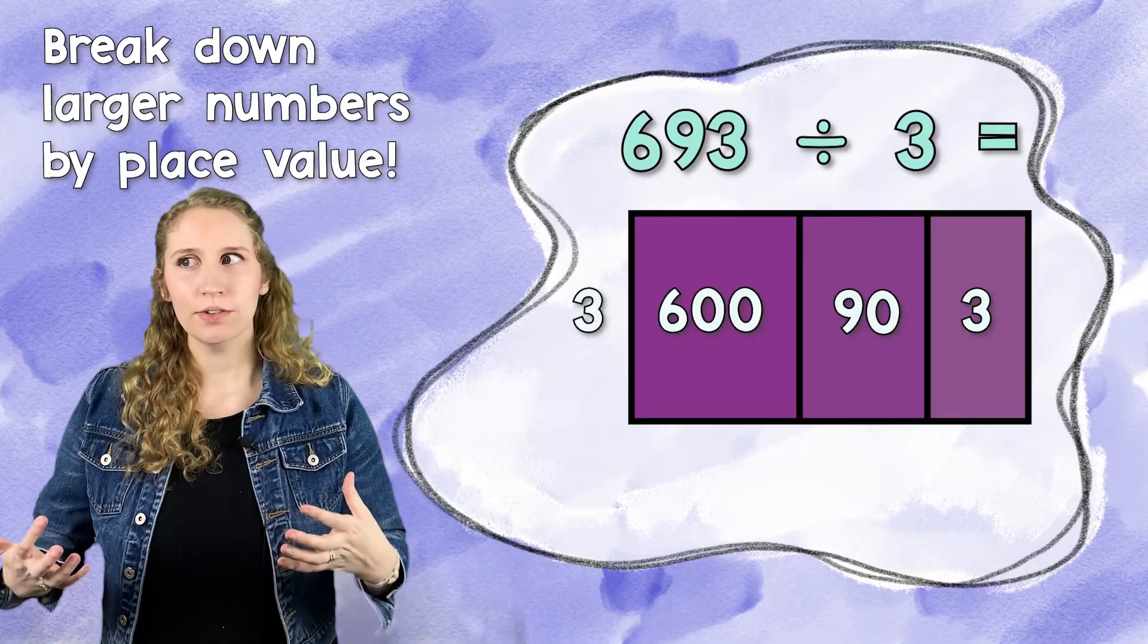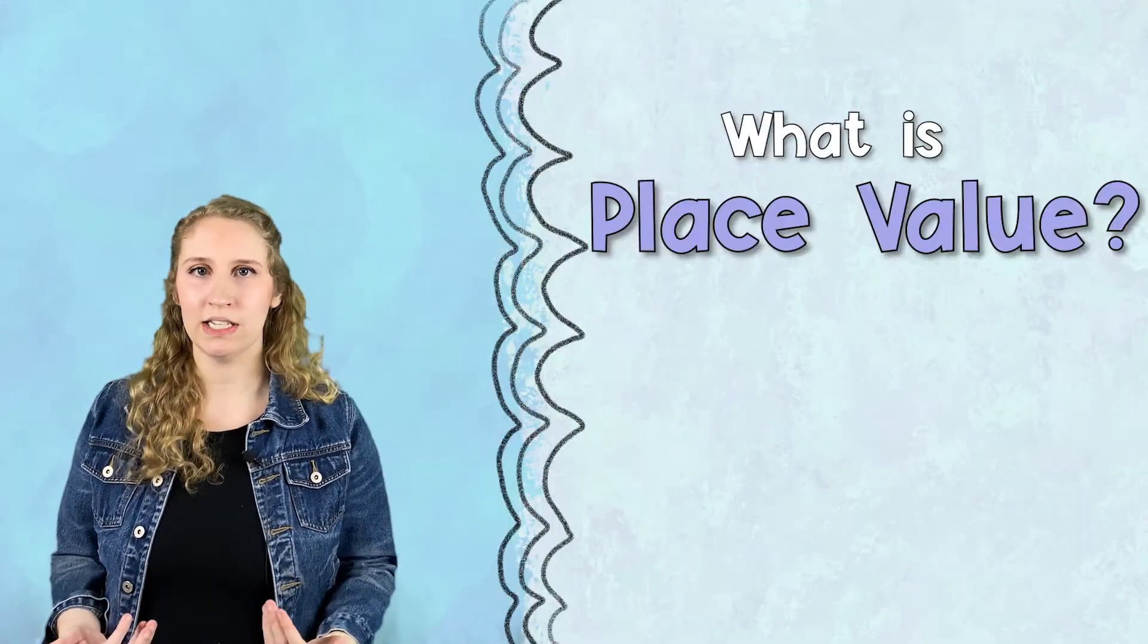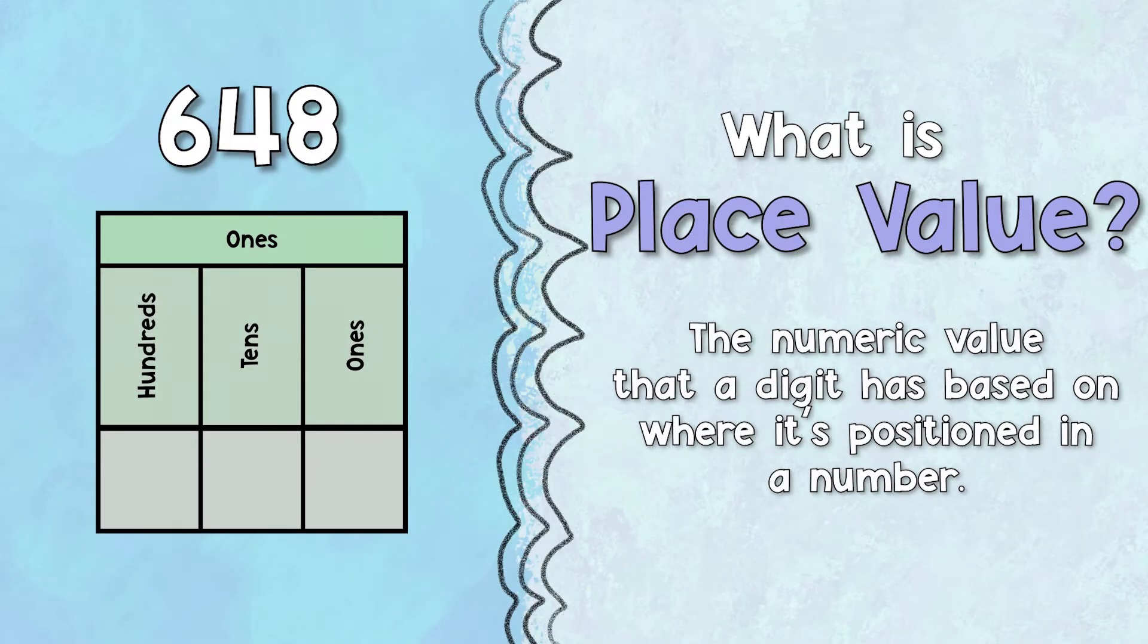So just a reminder, what is place value? Place value is the numeric value that a digit has based on where it's positioned in a number. So 648, there's six hundreds, four tens, and eight ones.